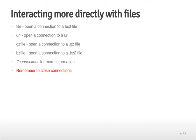We're going to be talking about connections to files. Basically, these are connections that allow you to read specifically and directly from a file and leave that connection open so that you can interact with files directly rather than reading them all in at once, like you did with read.table or read.csv.